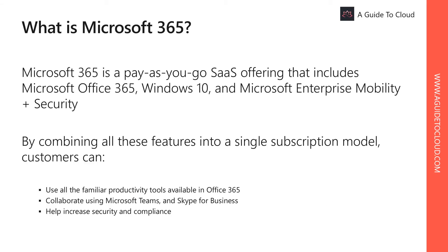So what is Microsoft 365? Microsoft 365 is a pay-as-you-go SaaS offering that includes Microsoft Office 365, Windows 10, and EMS — Enterprise Mobility plus Security. When you purchase Microsoft 365 Enterprise, you get three core products: Office 365, Windows 10, and EMS.